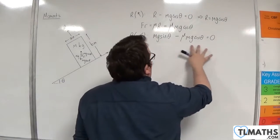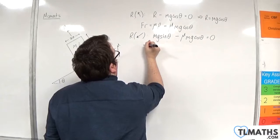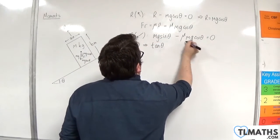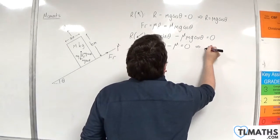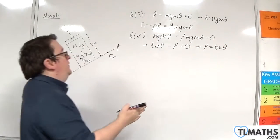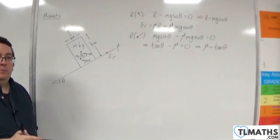So what I'm now going to do is divide through by mg cosine theta, because I'll get tan theta take away mu is equal to zero. So mu is going to be equal to tan theta, and that is when the block is on the point of slipping down the slope.